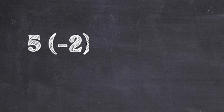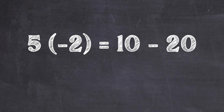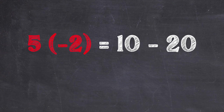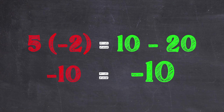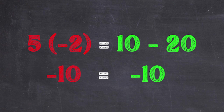Let's look at this equation: 5 times negative 2 equals 10 minus 20. Let's see if this equation is true. For the left-hand side, 5 times negative 2 is negative 10. Now let's look at the right-hand side: 10 minus 20 is negative 10. We can definitely say that negative 10 is equal to negative 10, so yes, the equation 5 times negative 2 equals 10 minus 20 is a true equation.